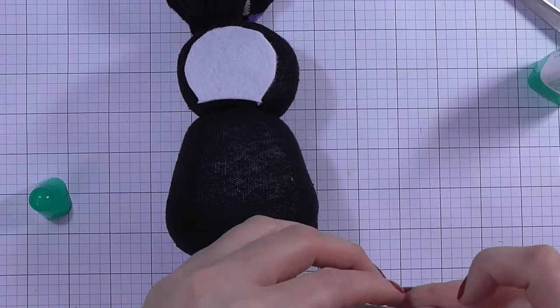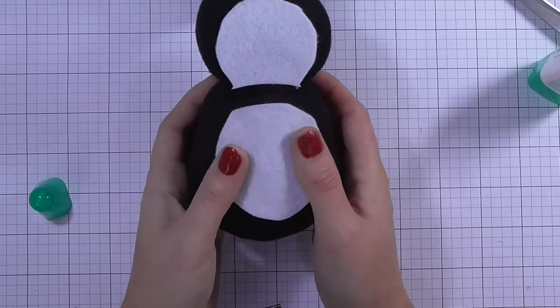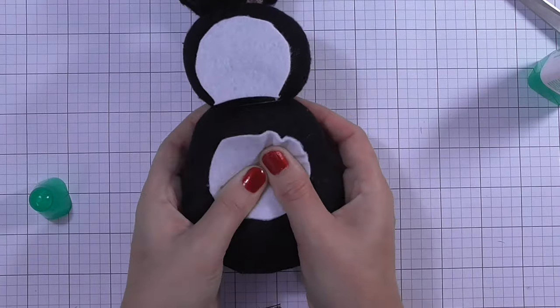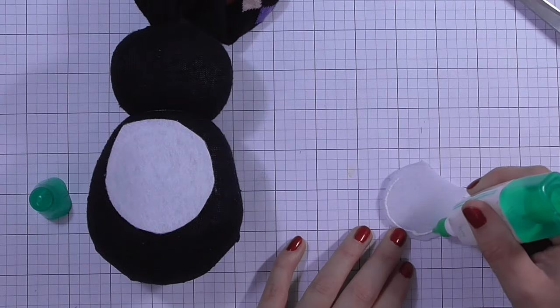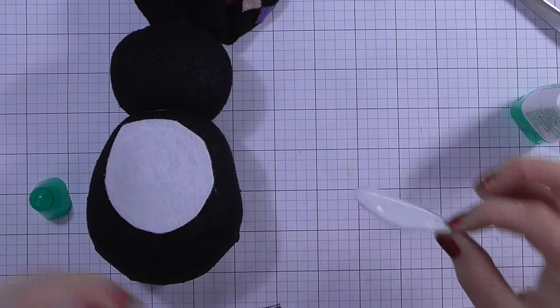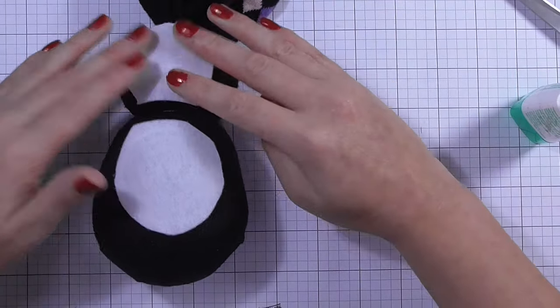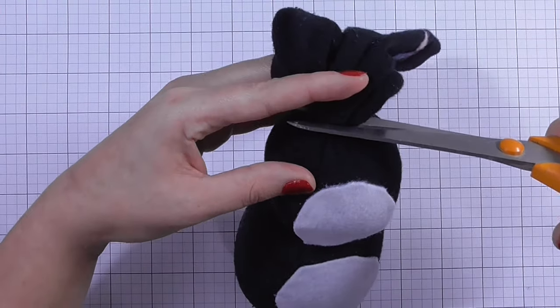I'm just taking some Tombow Mono Multi Glue and using that to attach the white stomach and the white face. You'll see that I originally did these almost like a figure eight together, but they weren't actually quite big enough, so I cut them apart so I could have those separate. It doesn't matter because that middle section is going to be covered up with a scarf anyway.